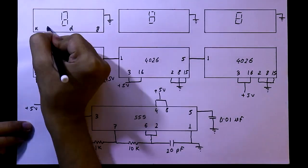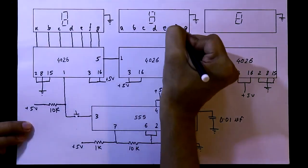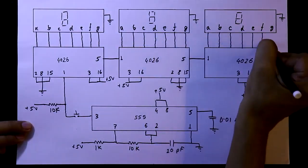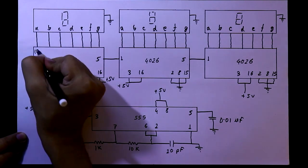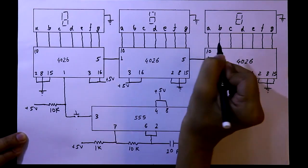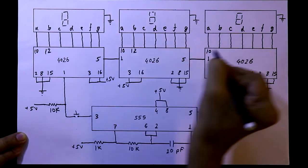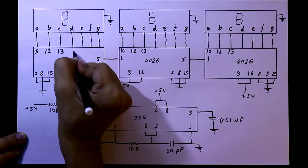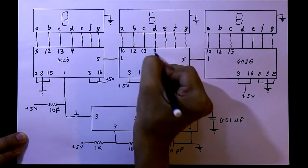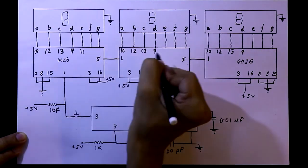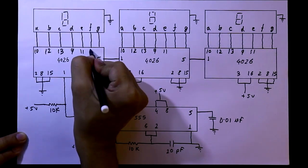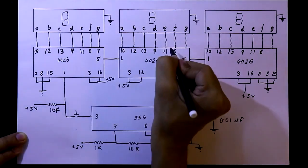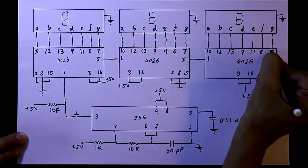As you know, this display has 7 input pins: A, B, C, D, E, F, G. Pin A is connected to pin number 10 of the IC. B is connected to 12, C is connected to 13, D is connected to pin number 9, E is connected to pin number 11, F is connected to pin number 6, and G is connected to pin number 7 of the IC.